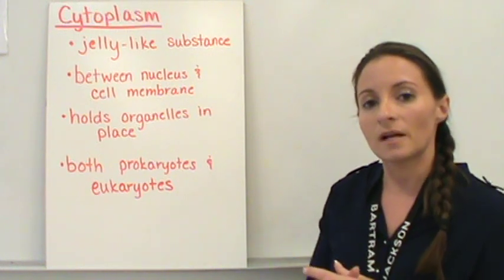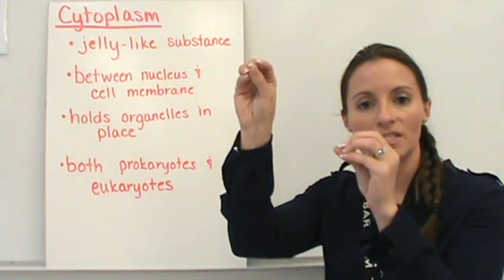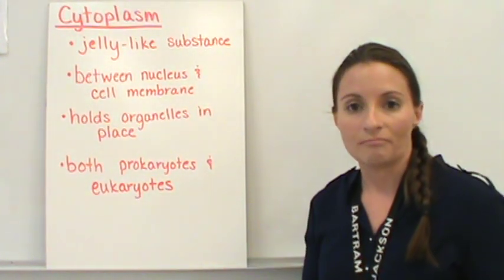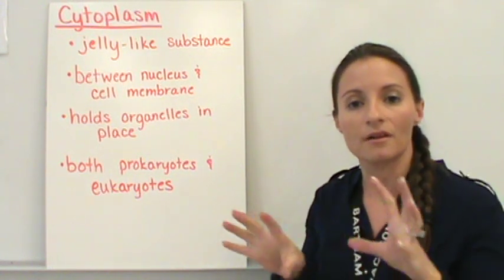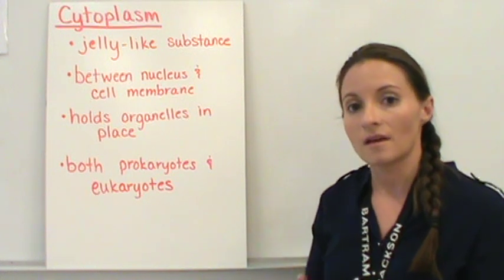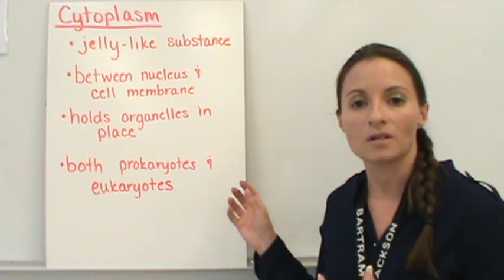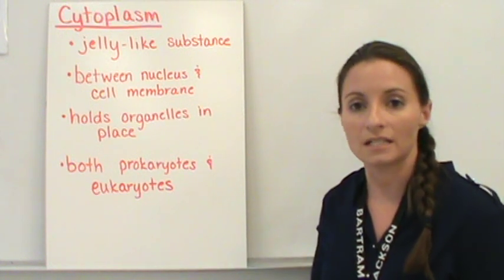So what the cytoplasm does is it allows those organelles to sit at different spots within the cell. And so it keeps them in place. It allows them to function appropriately with other organelles around them. And so that helps the organelles to function the way that they need to and it helps the cell to function the way that it needs to.